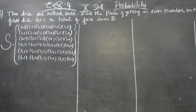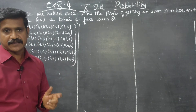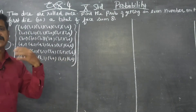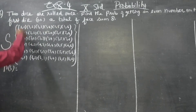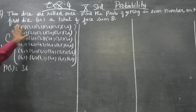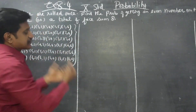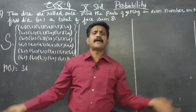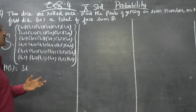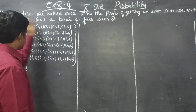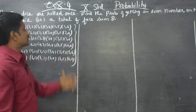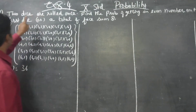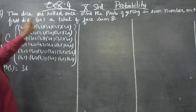After completing S, this is the sample space. When two dice are rolled, the total number of outcomes n(S) is equal to 36.